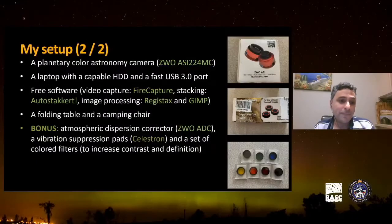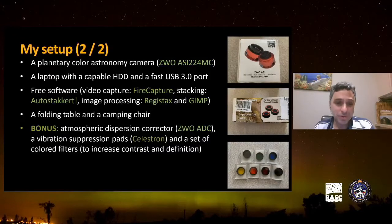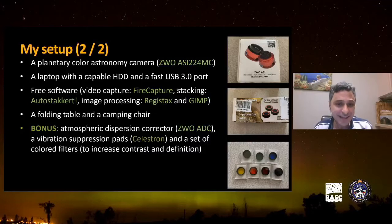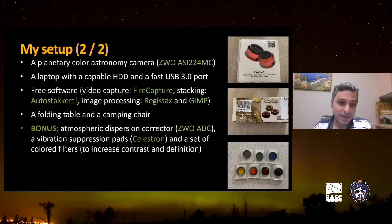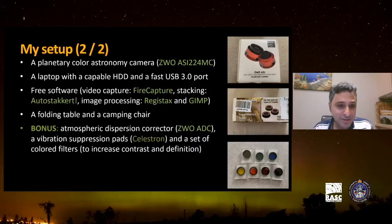I also have a folding table, a camping chair, and a blanket — very useful when you're outside for two or three hours. As a bonus, I use an atmospheric dispersion corrector. When objects are very low on the horizon, like Jupiter and Saturn in the next few years, it helps combine the different colors that are diffracted differently — red, green, and blue — for better processing. I also use a vibration suppression pad to reduce vibration when focusing.